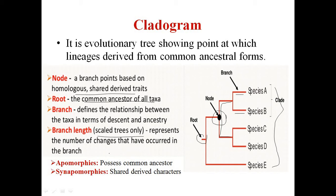Two other important terminologies for cladogram construction and analysis are apomorphies — derived characters possessed by a common ancestor — and synapomorphies — shared derived characters. The basis of classification is mainly the common ancestor and derived characters, and this same principle is used for the construction of a cladogram.